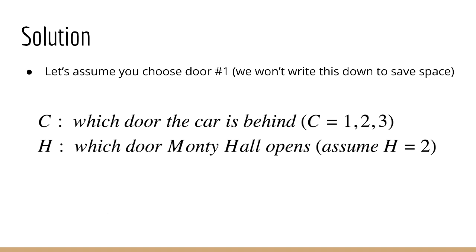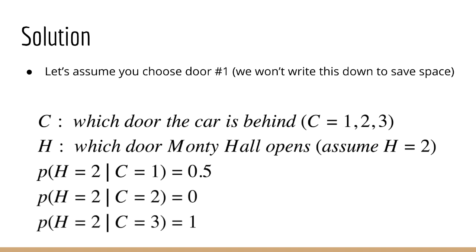So we can define these conditional probabilities. P of H equals 2 given C equals 1 is equal to 0.5. P of H equals 2 given C equals 2 is zero. P of H equals 2 given C equals 3 is one. Let's look at why these are defined this way. Remember that you chose door number one. So if the car is actually behind door number one, which corresponds to C equals 1, then Monty Hall will open either of the other doors. He can choose either one because he just wants to show you a goat. Therefore it doesn't matter which door Monty Hall chooses, either two or three, if the car is behind door number one. But if you chose door number one and the car is behind door number two, then Monty Hall can't open door number two because he doesn't want to show you the car. So the probability of that is zero. So if C equals 2, then H equals 2 is not possible, according to the rules of this game.